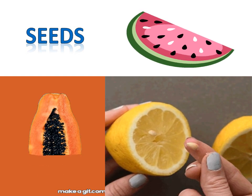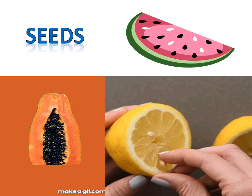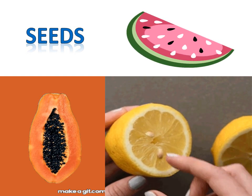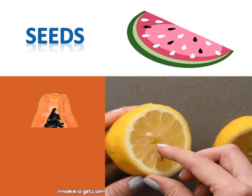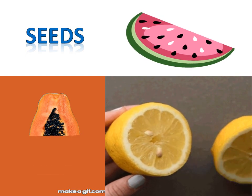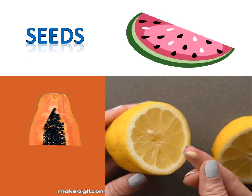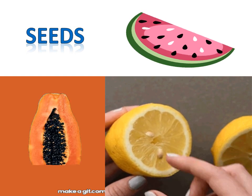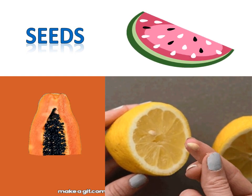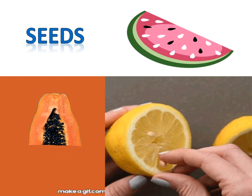Look here — watermelon has white and black seeds, and papaya has different seeds. Both are fruits. Even lemon has seeds inside. So fruits and vegetables have different types and different sizes of seeds inside them.